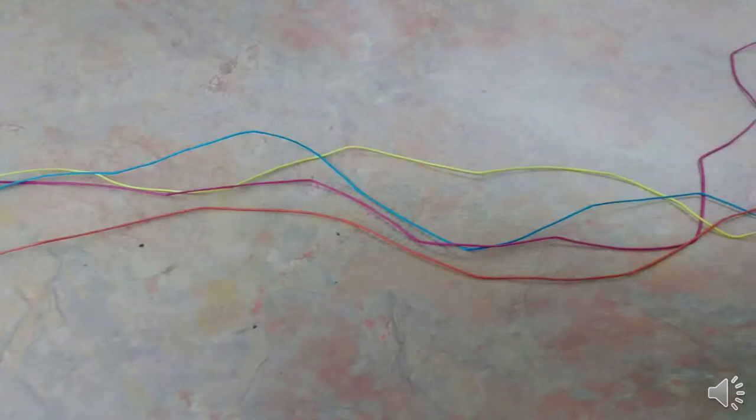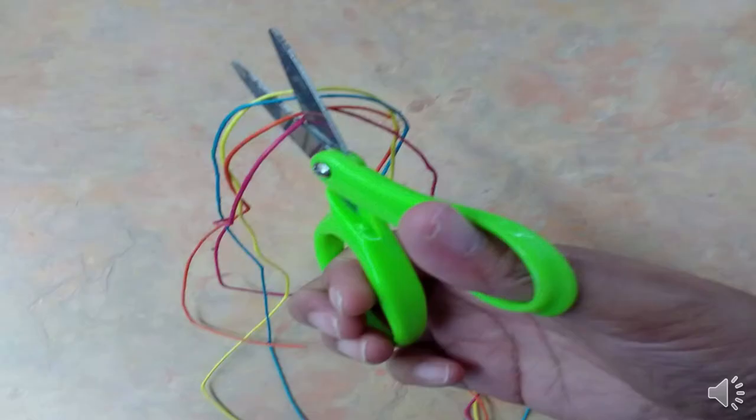There's enough cord to make two bracelets. Gather up the cord, fold it in half, and simply cut the middle so you have enough cord for two bracelets.